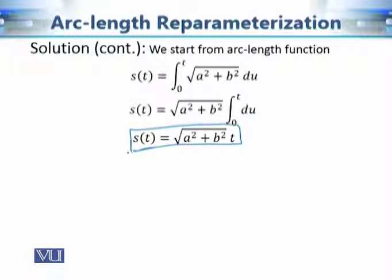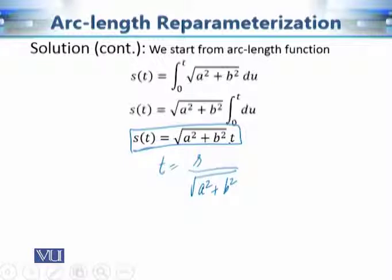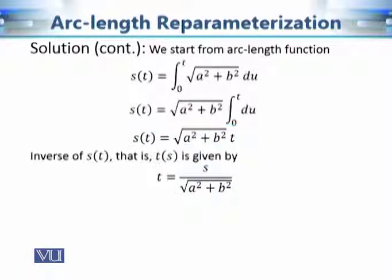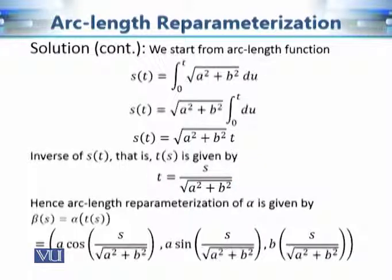Since sqrt(a² + b²) is constant, it comes outside the integral. With base point 0, the arc length function evaluates to s(t) = t · sqrt(a² + b²). In this case, we can easily find the inverse: t = s / sqrt(a² + b²). The theorem guarantees the inverse always exists, and here we can calculate it explicitly.